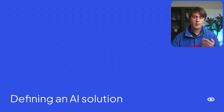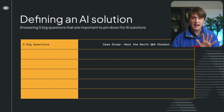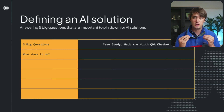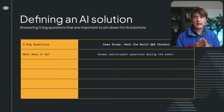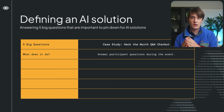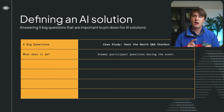Now that we've found our problem, what does our AI solution actually look like? Clearly defining a solution comes with five big questions. The first, pretty obviously, is what does our solution actually do? In Hack the North's case, the solution is to answer participants' questions about the event automatically — not answering questions before the event, and not answering internal organizer questions. We've defined a scope of what it'll be doing.